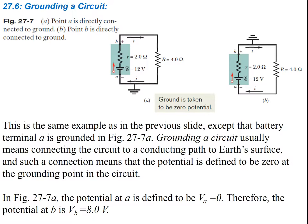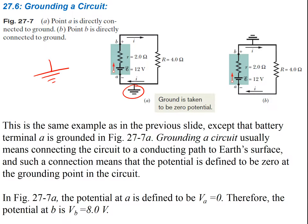Grounding a circuit: this is the same example as before, except that battery terminal A is grounded. Grounding a circuit usually means connecting the circuit to a conducting path to the Earth's surface, and such a connection means that the potential is defined to be 0 at the grounding point. So the potential at A is defined as VA equals 0. Therefore, the potential at B is just going to be 8 volts, because we know the change of potential through the battery is 8 volts.